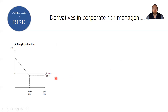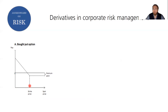Here's a depiction of a bought put option — this is the payoff when the contract matures. You have the spot price on one axis and the payoff of the derivative on the other, along with the strike price where your option kicks in. Below the strike price you generate a profit. When the spot price ends up above the strike price, you lose the premium you paid but get nothing in return. Once the spot price falls below the strike price, you eventually start generating a profit on the contract.